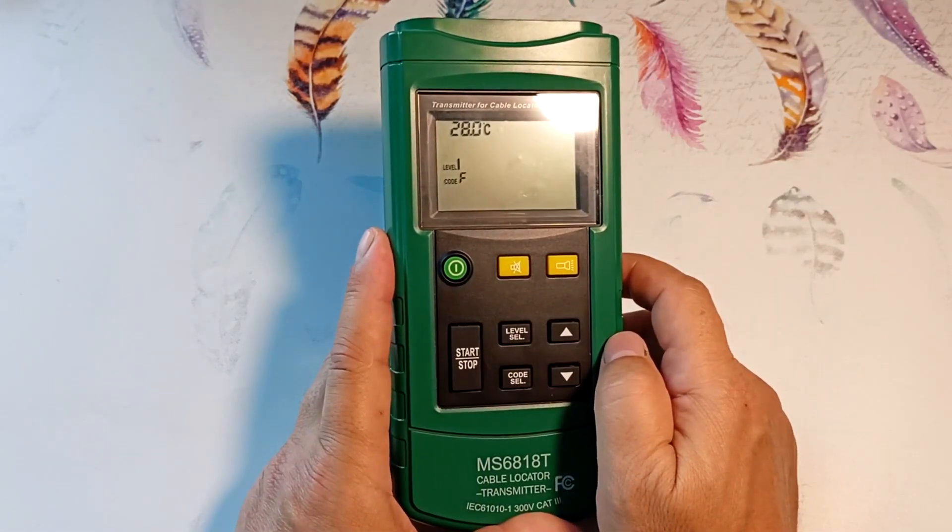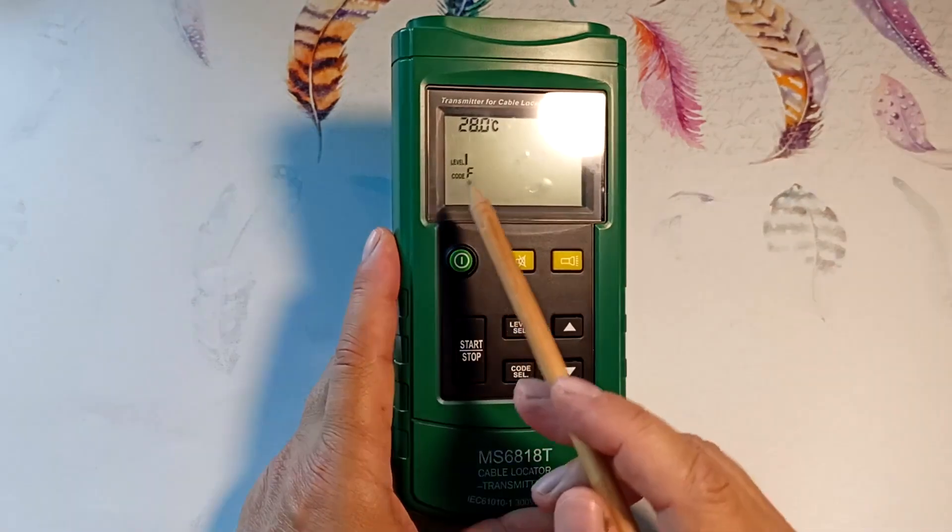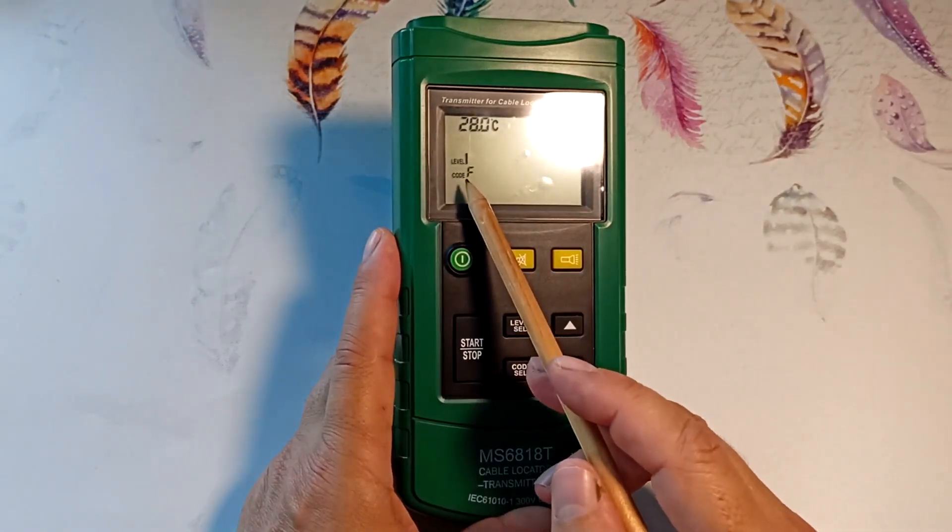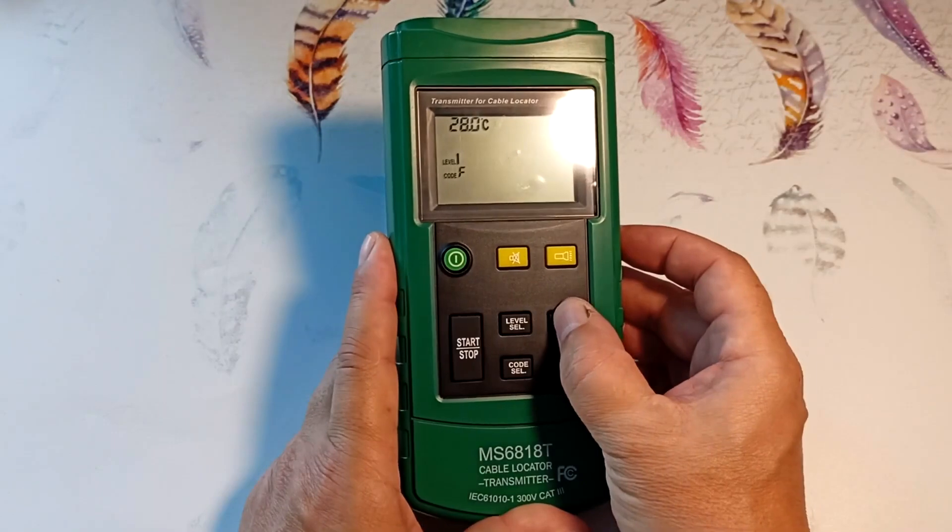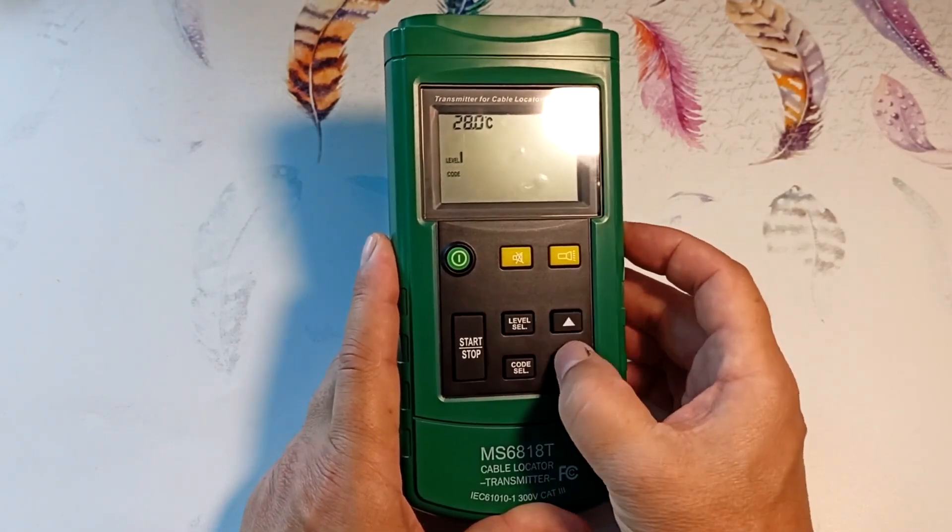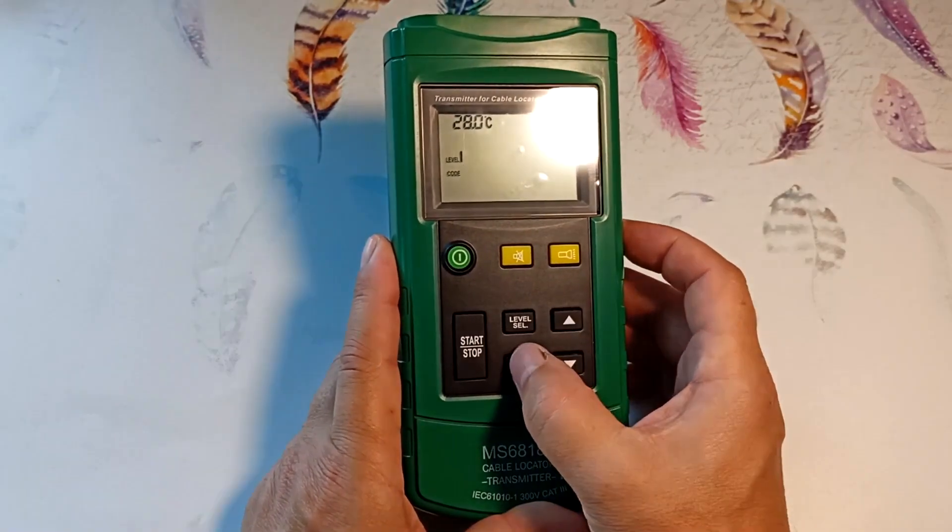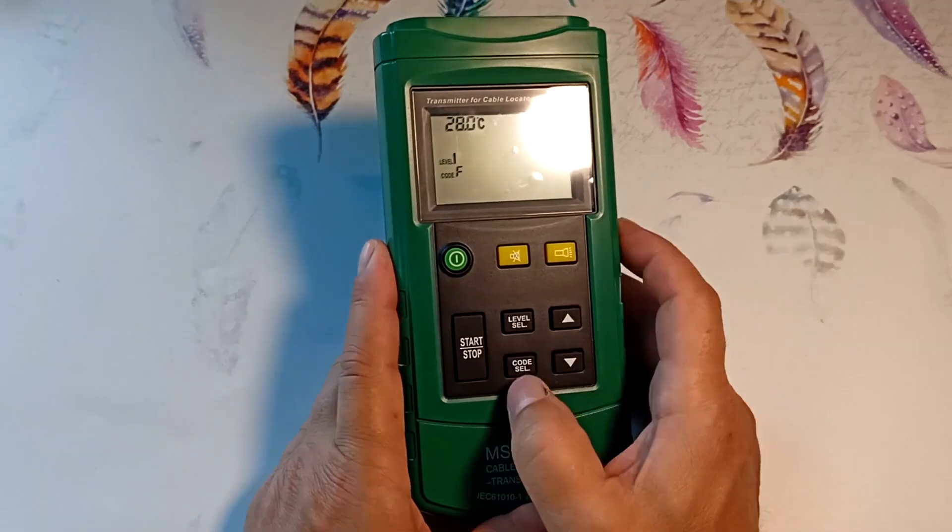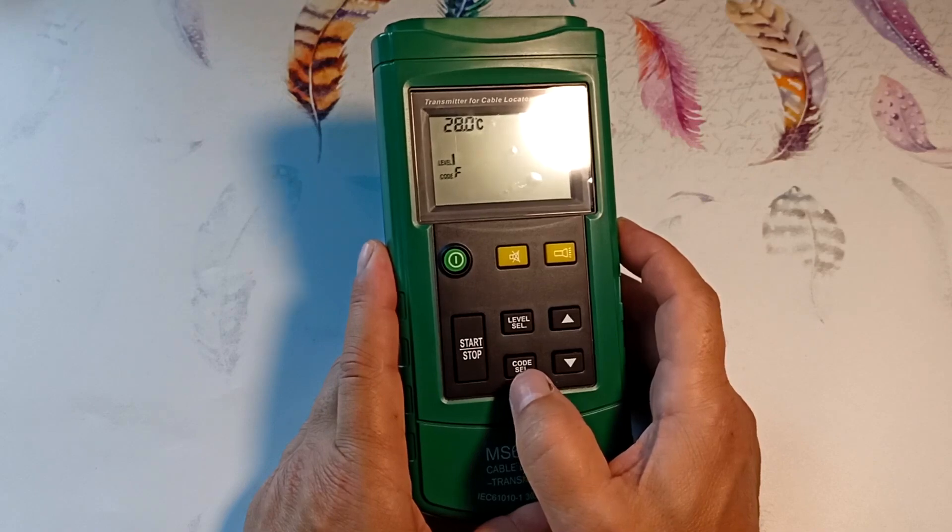You can choose one of eight codes. The default code is F, it is shown here on the display. Using the up and down buttons we can select a different signal encoding. Press the code key again. The encoding is remembered. I'll explain why this encoding is needed a little later.